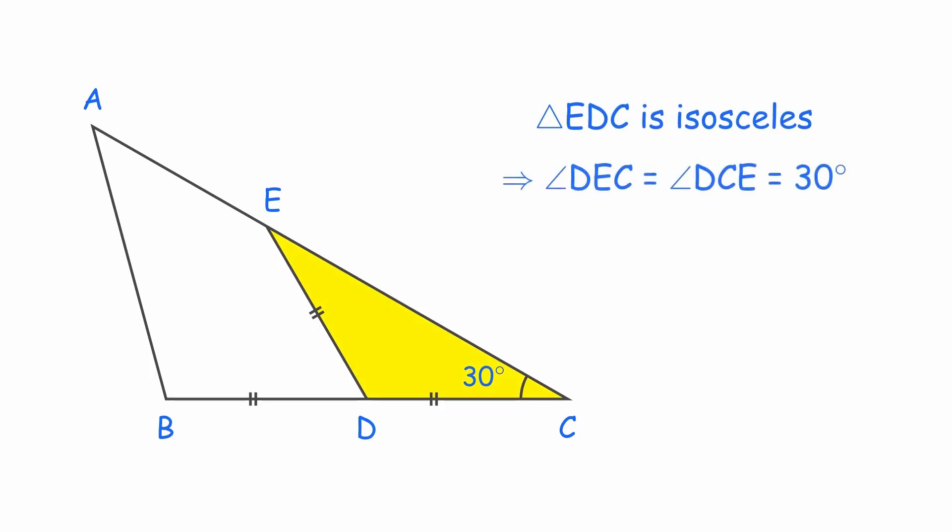That means angle DEC and DCE are both 30 degrees. And angle EDB, the external angle, is their sum, 60 degrees. Now connect BE and focus on triangle BED.